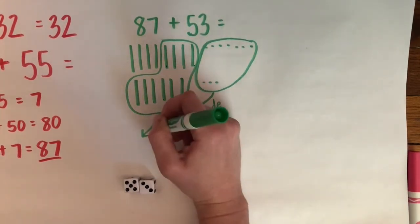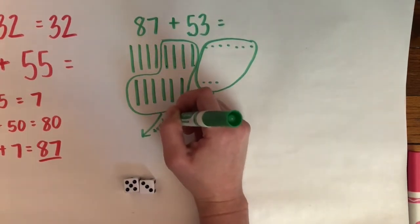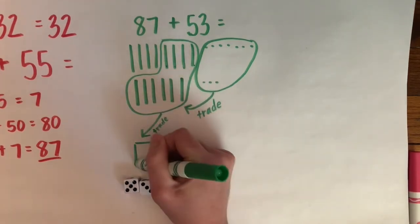So I'm going to circle these. Be very careful to stay organized. And I'm going to trade those for a 100s block.